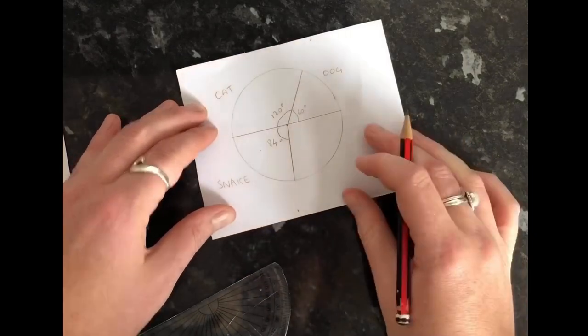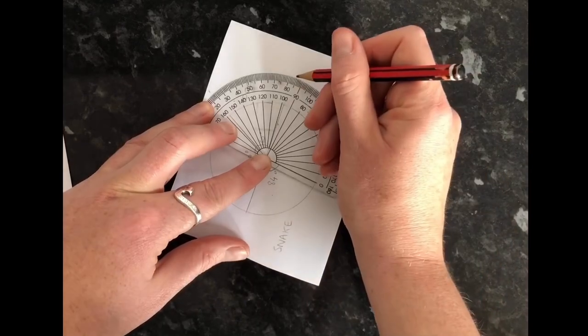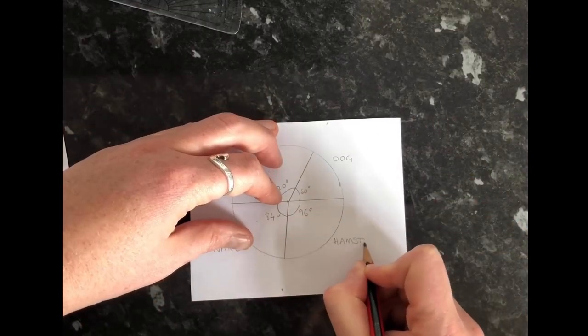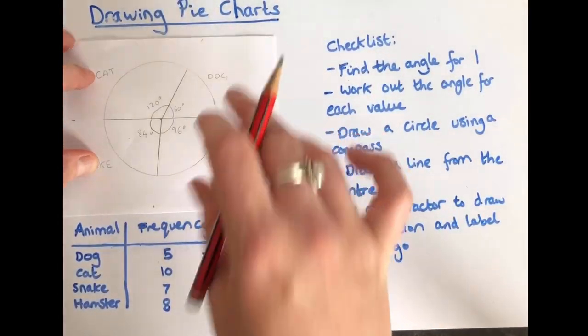And the last one on my table was my hamster which was 96 degrees so I will just double check. Now I've done this correctly so I'll line this up in the centre and on the line, on to 95, 96 degrees. So I have to label this as 96 degrees. And there we have drawn our pie chart.